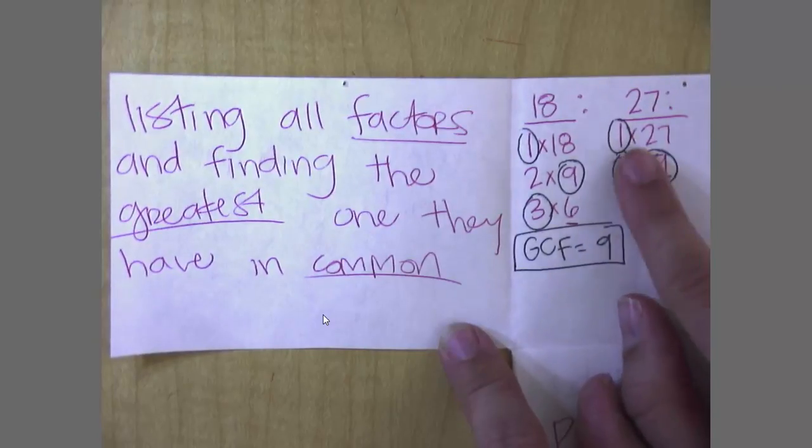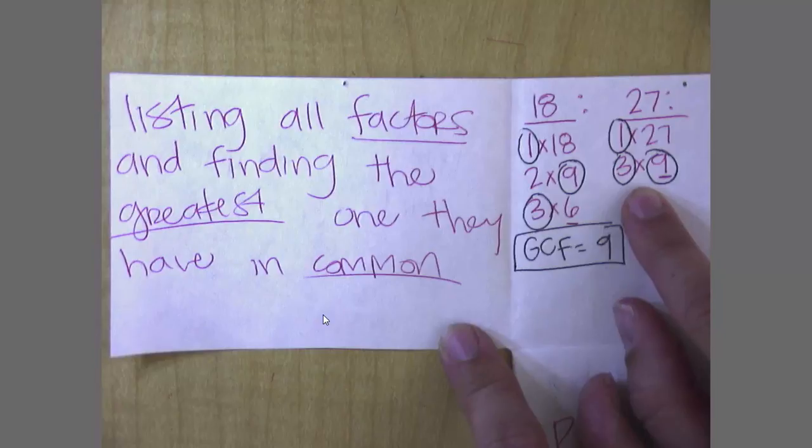1 times 27, go to my 2's. It's not an even number, so I move on. Look at 3, 3 times 9. 4's, no. 5, no. 6, 6 times 4 is 24, 6 times 5 is 30, so no 6's. No 7's. There's not an 8. And I look at my 9, I've got 9 times 3, and I've already got it written down.